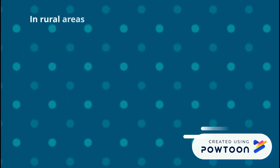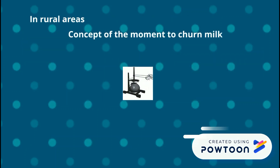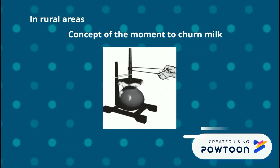In rural areas, people still use the concept of moment to churn milk. By providing a torque to the handle with the help of a rope, the wooden stick rotates about its axis and thus churns the milk.